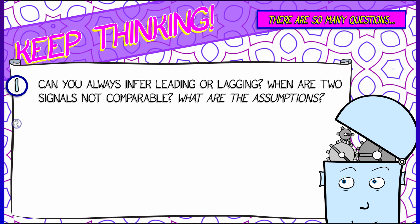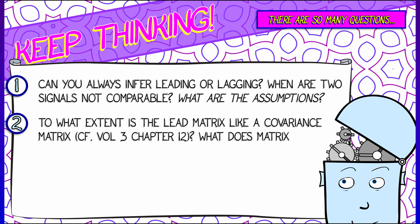But look, there are more questions. This lead matrix kind of reminds me of a covariance matrix. Do you remember those guys? Volume 3, chapter 12. Hmm. I wonder, I wonder if we can, with this lead matrix, do all the same kinds of things that one can do with a covariance matrix. Things like filtering and data analysis, other things.